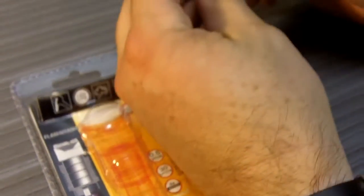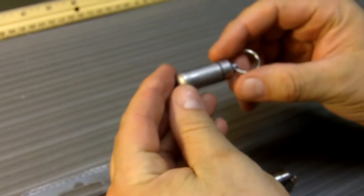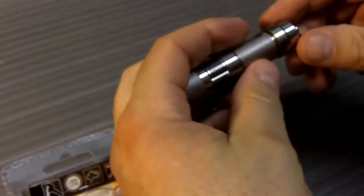Now, many of you may be familiar with the Cash Stash that True Utility makes, which is a capsule designed to hold a bill. Well, this incorporates that into a flashlight.